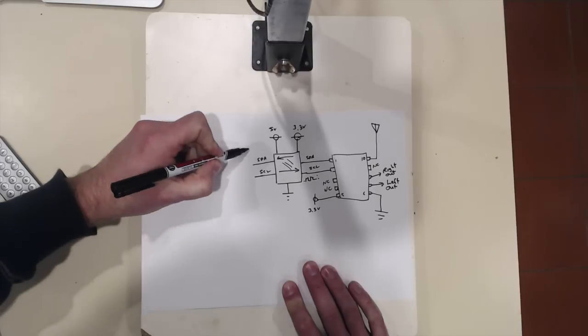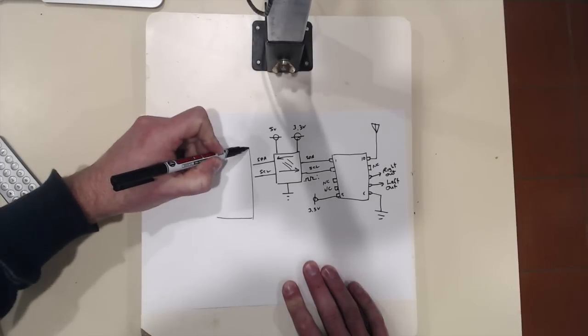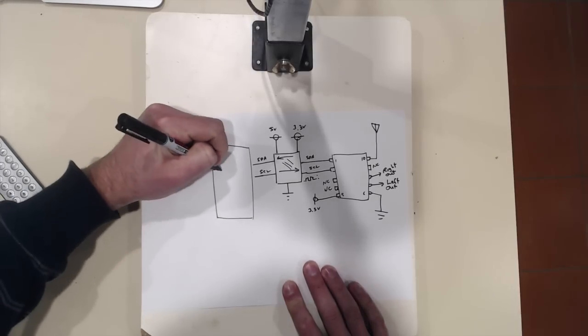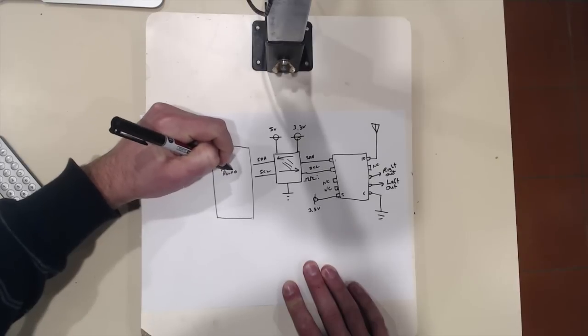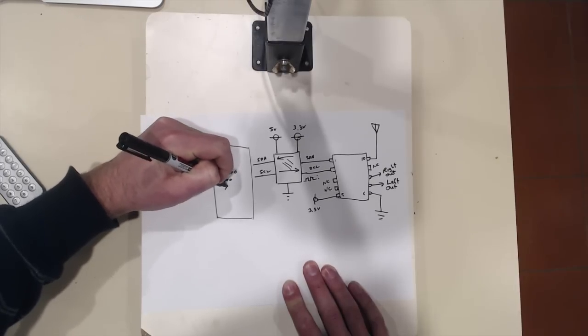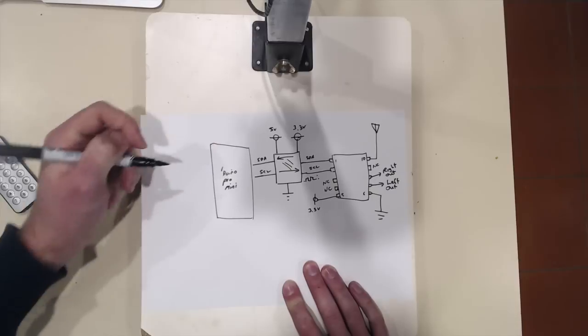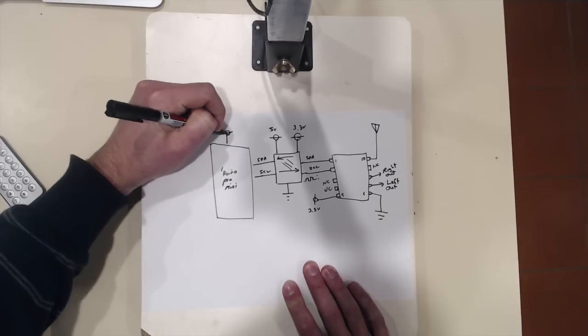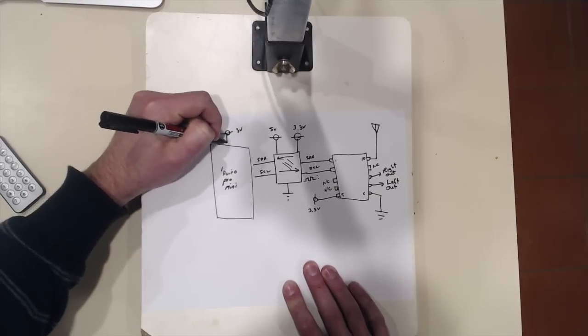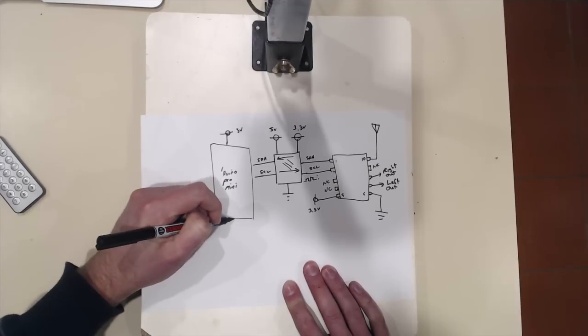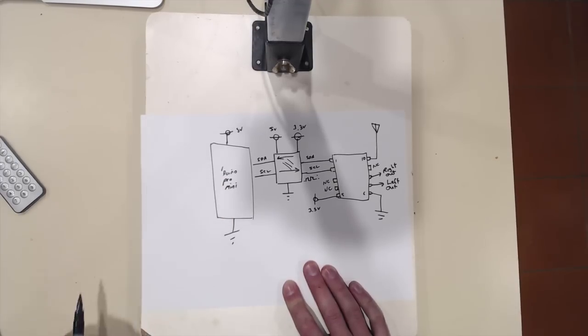So, the next thing that this connects to is the Arduino Pro Mini. And, that's connected to 5 volts. And, also connected to ground.